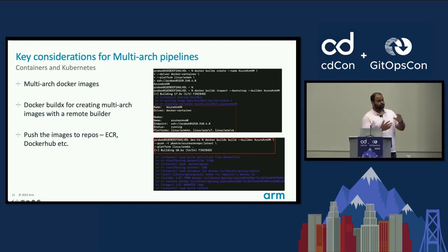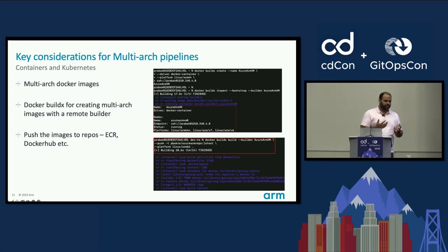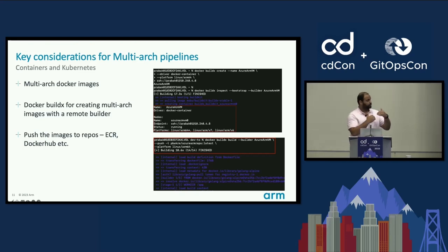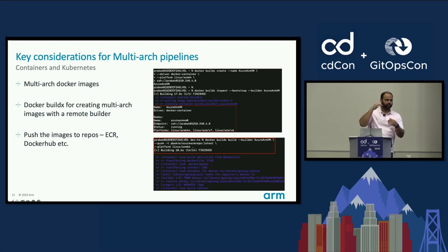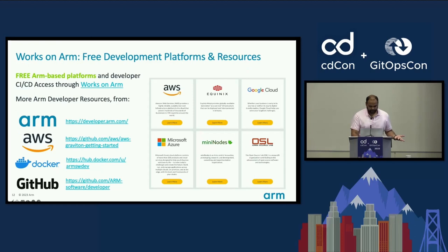When you push those images, Docker registry, Amazon ECR, and other public registries all support ARM-based images. In Docker Hub under tags, you'll see AMD64, ARM64, and x86_64 — all supported natively. If you're publishing to ECR and deploying on EKS or AKS, you can easily do that with a multi-arch image.